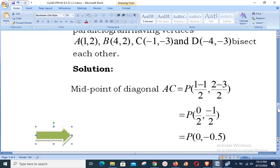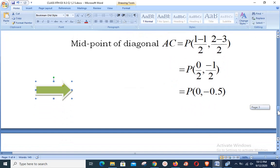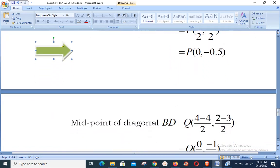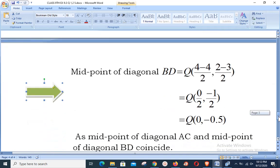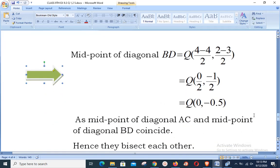Now we calculate the midpoint of diagonal BD using the same midpoint formula: (x₁+x₂)/2, (y₁+y₂)/2. We name this point as Q((4+(-4))/2, (2+(-3))/2). In the next step, we have (0/2, -1/2), that means we are having Q = (0,-0.5), which is the same as point P, the midpoint of diagonal AC.